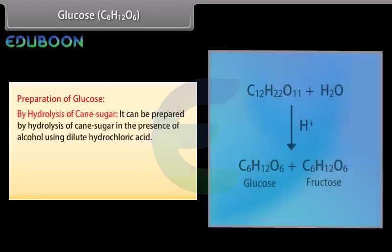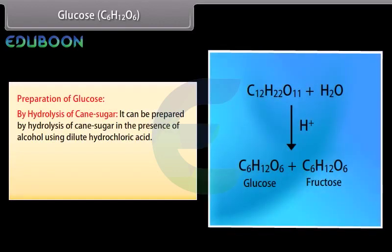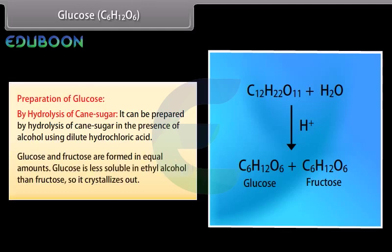The methods of preparation of glucose are as follows. By hydrolysis of cane sugar: it can be prepared by hydrolysis of cane sugar in the presence of alcohol using dilute hydrochloric acid. Glucose and fructose are formed in equal amounts. Glucose is less soluble in ethyl alcohol than fructose, so it crystallizes out.